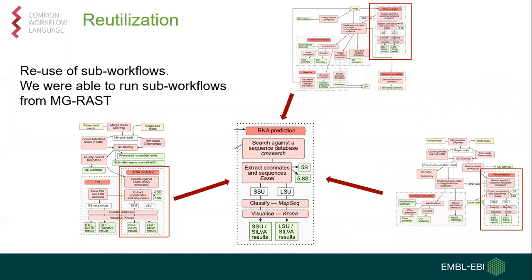Another big component is reutilization. Many of these tools have been developed not only by our group but also by different groups — for example, MGRAS. They are also creating Common Workflow Language pipelines or workflows that we can reuse. For example, MGRAS has components for RNA prediction that we can integrate into our own pipeline to facilitate integration with different elements.